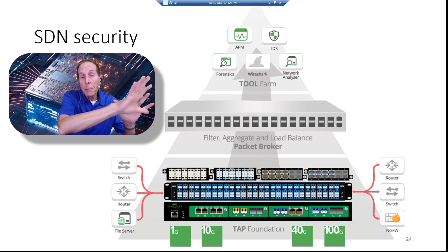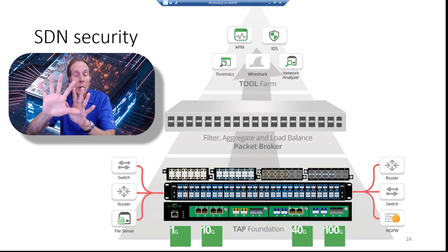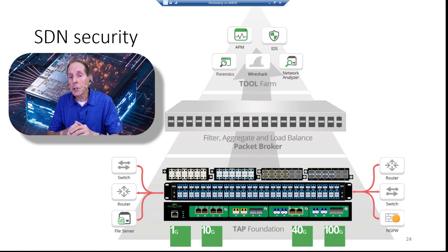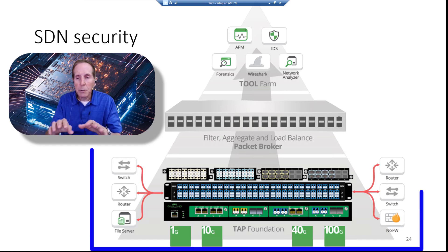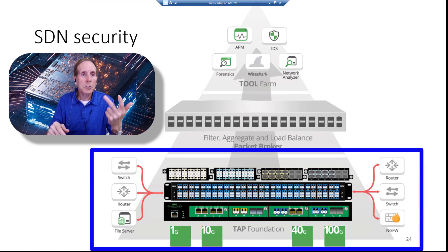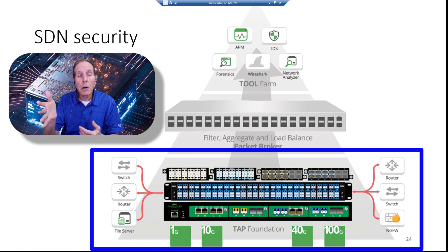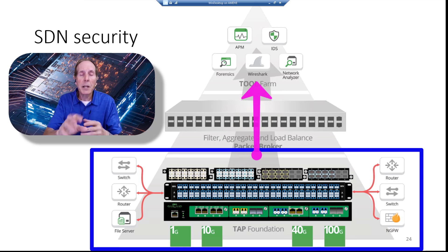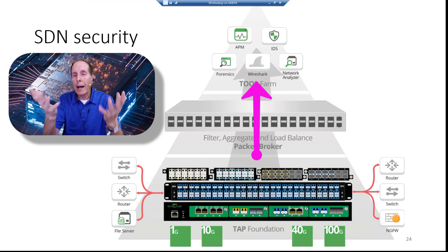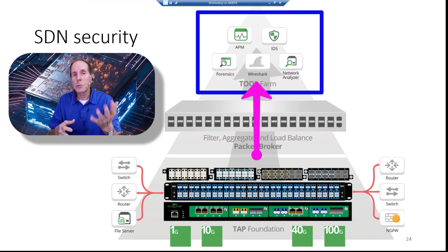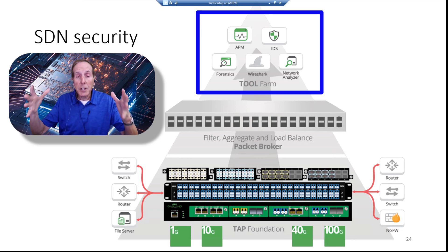In an SDN security implementation, hardware sits below with taps that can be plugged into switches, routers, and file servers. We can also plug into next-generation firewalls and send metrics and information up to applications such as network analyzers, Wireshark, IDS, and forensics — giving us a clear view of what's happening in our data center.